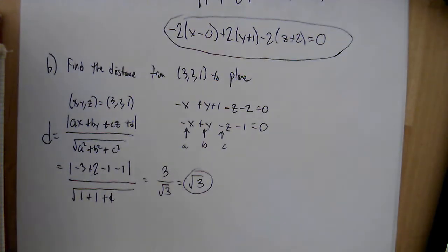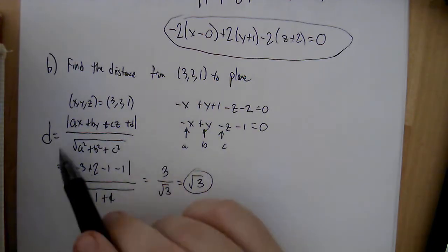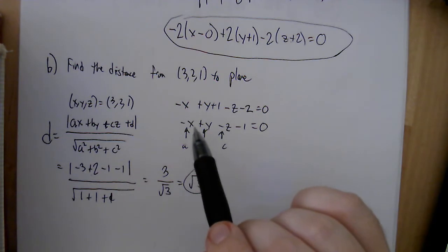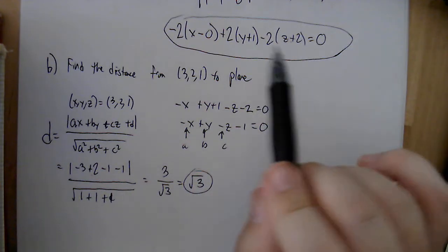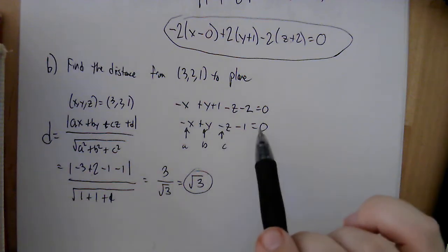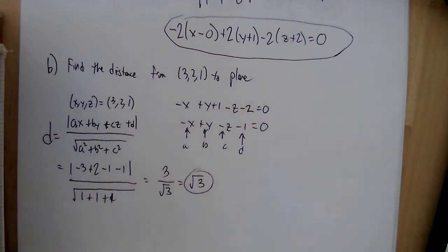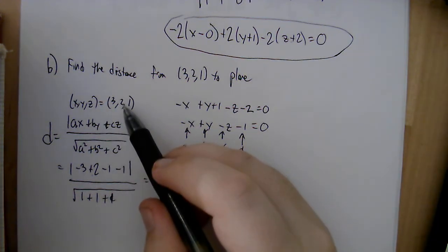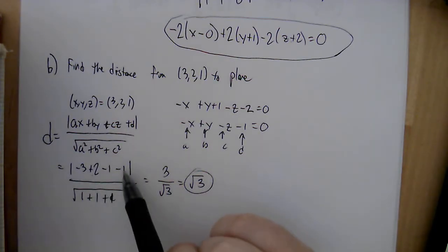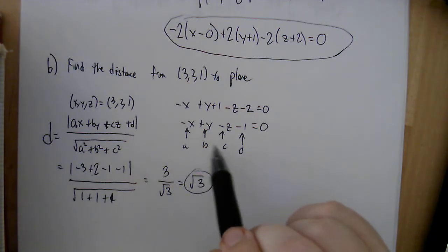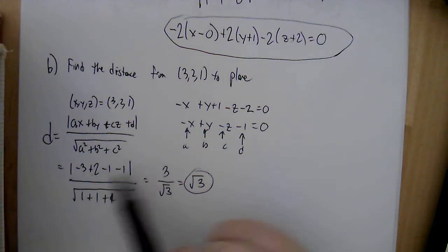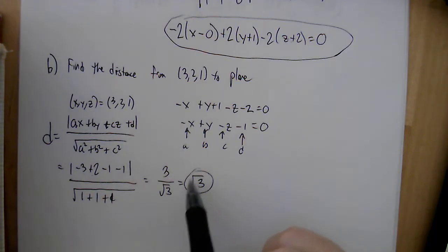Next, find the distance from point (3, 2, 1) to the plane. Using the point-to-plane distance formula, where a, b, c are the normal vector coefficients, I simplify the plane equation by dividing by 2, giving negative x plus y minus z minus 1 equals 0. Plugging in the point coordinates: the numerator simplifies to 3, and the denominator — the magnitude of the normal vector — is root 3. The distance is 3 over root 3, which equals root 3.